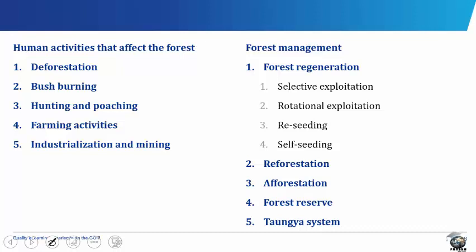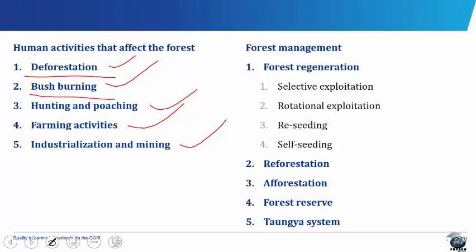Human activities that affect forests include deforestation, bush burning, hunting and poaching, farming activities, and industrialization and mining. Deforestation is the destruction of the forest or the felling of forest trees — this not only reduces the population of wild plants and animals but also exposes the soil to erosion. Bush burning destroys the trees. Man often uses the practice of burning to recover land after a long fallow period, which leads to depletion of wildlife.